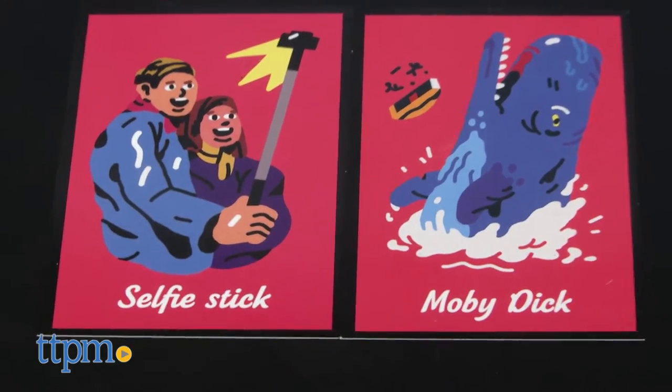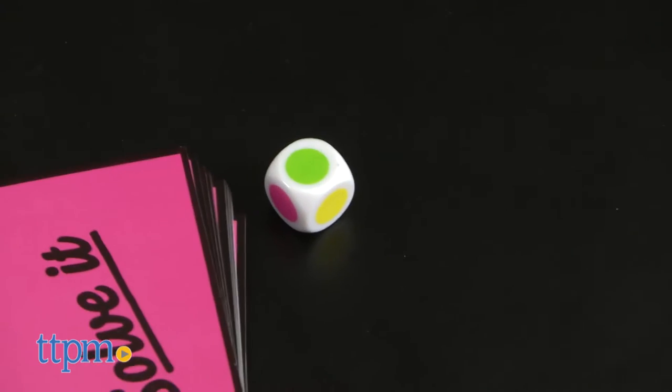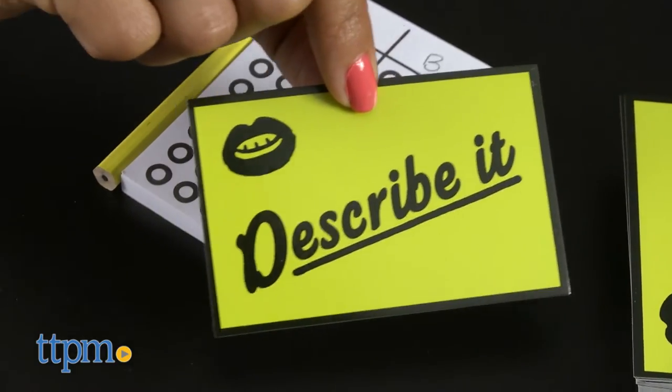There are three rhyming rounds. The person who looks the most like Obama or a Llama rolls first. If you roll green, the team plays from the describe it pack.